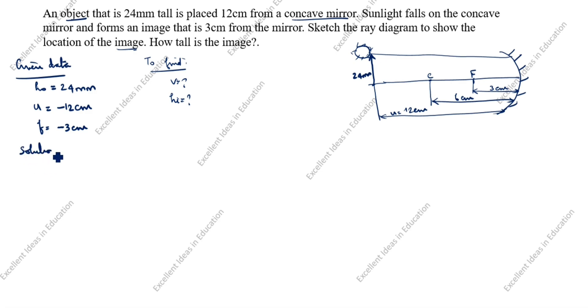Solution. What is the formula? 1 by V plus 1 by U is equal to 1 by F. 1 by V - V value we need to find - plus 1 by U. U value we know is minus 12. What is F value? Minus 3. So 1 by V is equal to 1 by minus 3 plus 1 by 12. This minus goes this side as plus.